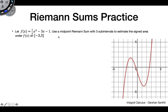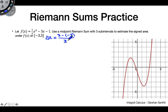For our next example, we have the polynomial f(x) = ½x³ − 3x − 1. We'll use a midpoint Riemann sum with 3 subintervals to estimate the signed area from −3 to 3. The general structure is the same. Delta x is (3 − (−3)) / 3 = 6/3 = 2. When we find our area, we factor that 2 out and put in the relevant height values.